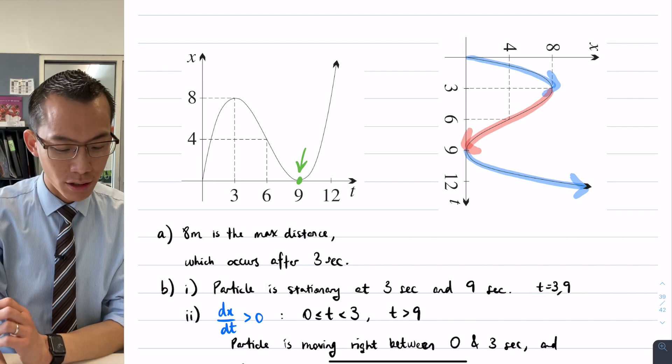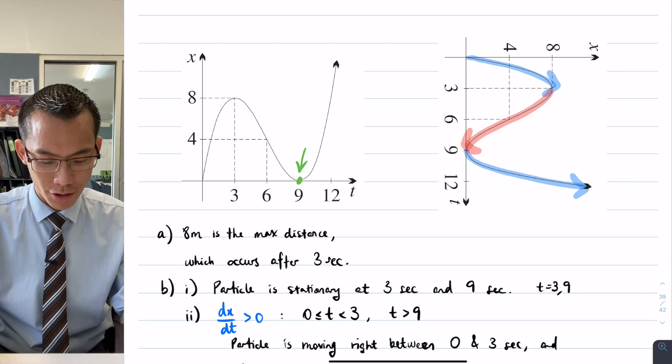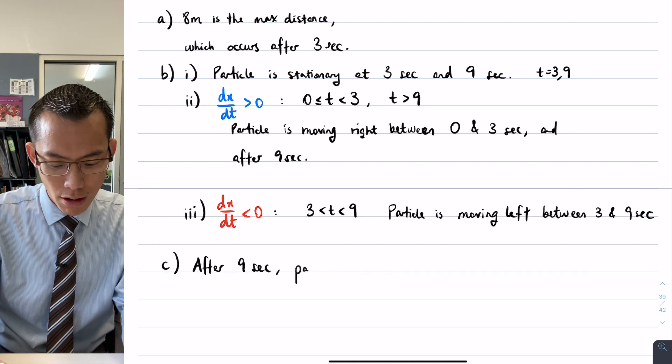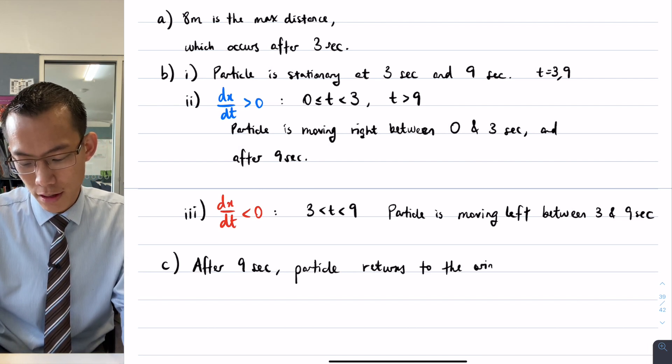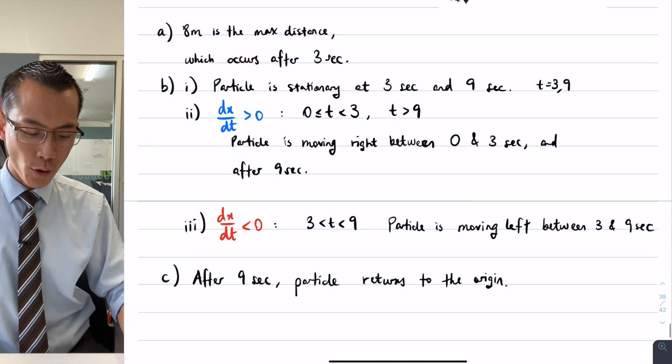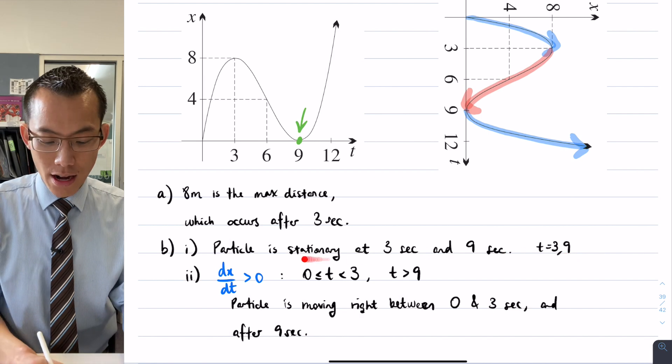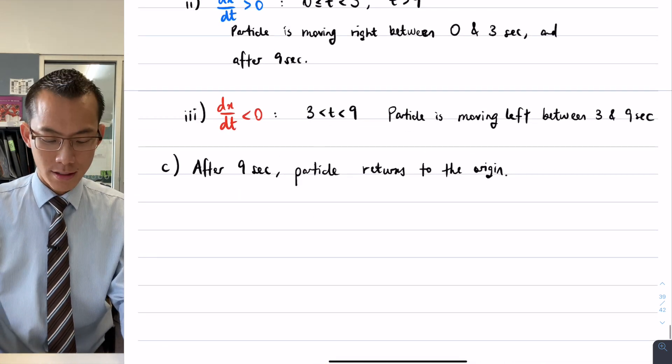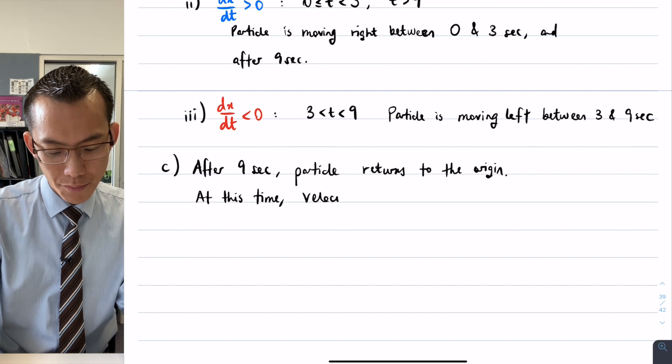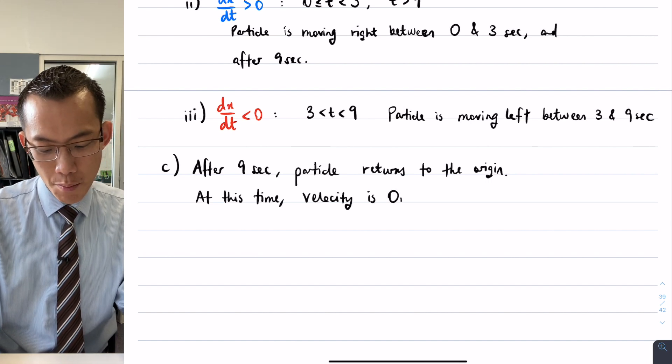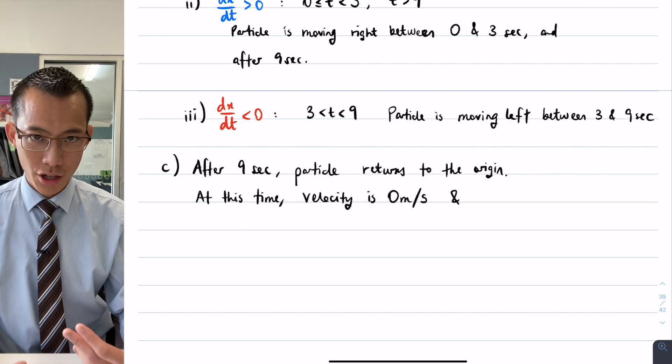Particles, of course, don't have to start at the origin, you could start your particle anywhere you like, like here or here, but in this case the particle does start there, which is why they say return to the origin. So after 9 seconds, particle returns to the origin, and then the next two questions within part C are about velocity and acceleration. Now, like I mentioned before, we've already answered some of this, right? Because we identified time 9 as one of our stationary points. Here it is right here, particles stationary at 3 and 9, so what is its velocity? Its velocity is 0. So at this time, velocity is 0, and because my units are meters and seconds, I will include them in my answer, velocity is 0 meters per second, and then I have to say the direction of the acceleration.